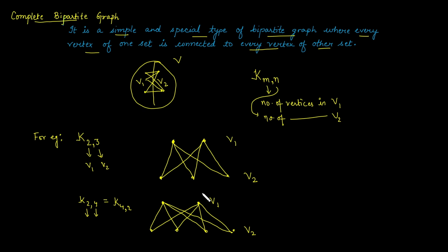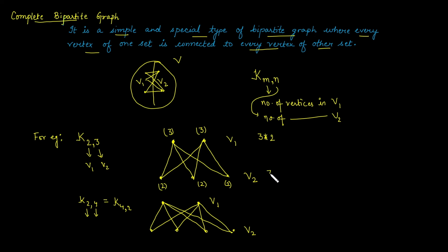Next, let's calculate the degree of a complete bipartite graph. For K2,3: each of the 2 vertices in V1 has degree 3, giving a total degree for V1 of 3 times 2. Each of the 3 vertices in V2 has degree 2, giving a total degree for V2 of 3 times 2. The total degree of the graph is the sum, which equals 2 times 3 times 2.